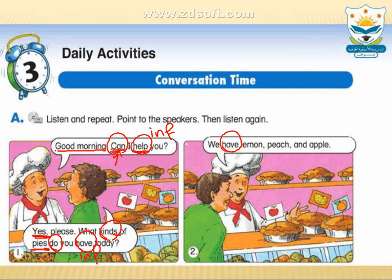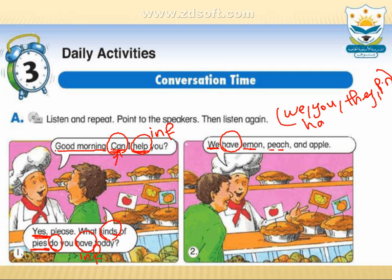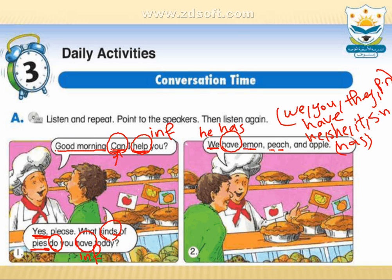'We have lemon, peach, and apple.' Why do we use 'have'? Because the subject is 'we.' We, you, they, and plural nouns take 'have.' He, she, it, and singular nouns take 'has.' So if I have 'he' here, I will say 'he has.' Again: 'We have lemon, peach, and apple.'